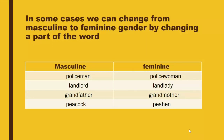In some cases, we can change from masculine to feminine gender by changing a part of the word. For example: Masculine: policeman — Feminine: policewoman. Masculine: landlord — Feminine: landlady. Masculine: grandfather — Feminine: grandmother. Masculine: peacock — Feminine: peahen.